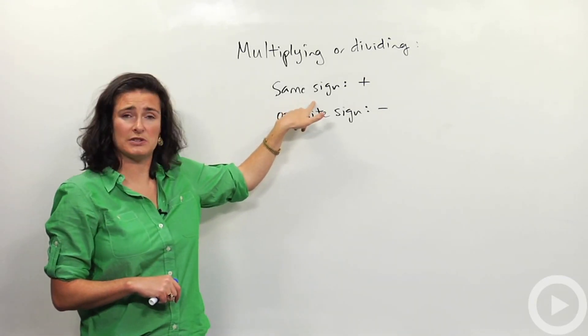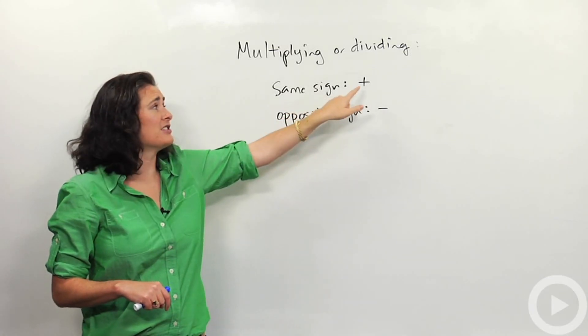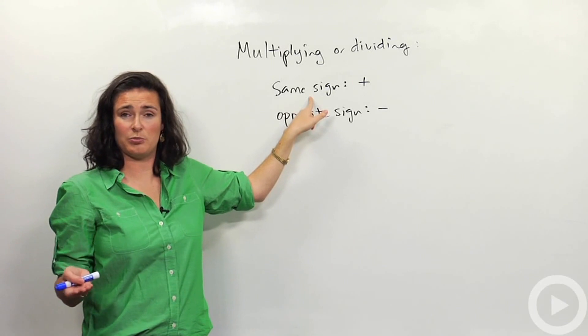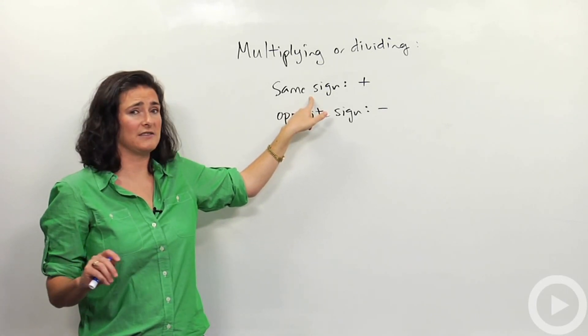If you're multiplying two numbers that have the same sign, your answer is going to be positive. And by same sign, I mean either your numbers are both positive to begin with or both negative to begin with.